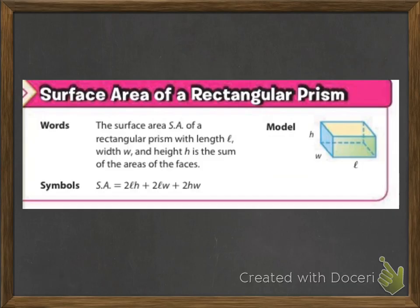So the surface area of a rectangular prism involves the length, width, and height. We've got two times the length and the height, because that's our front and our back. Then we've got two times the length and the width — that's our sides. And then we've got two times the height and the width — that's our top and bottom. We have two of each of them, so that's why it's times two.